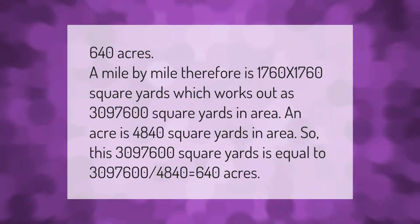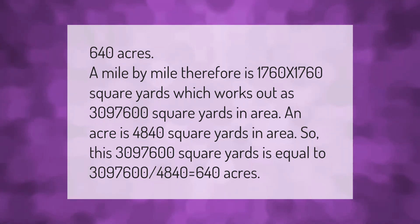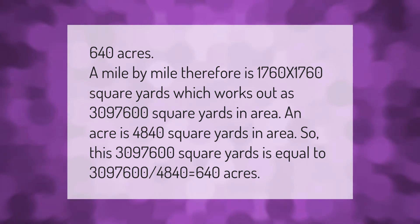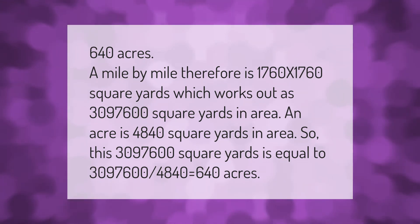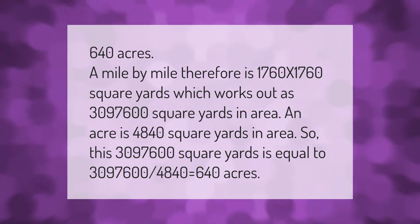640 acres — a mile by mile — is therefore 1,760 × 1,760 square yards, which works out as 3,097,600 square yards in area. An acre is 4,840 square yards in area, so 3,097,600 square yards divided by 4,840 equals 640 acres.